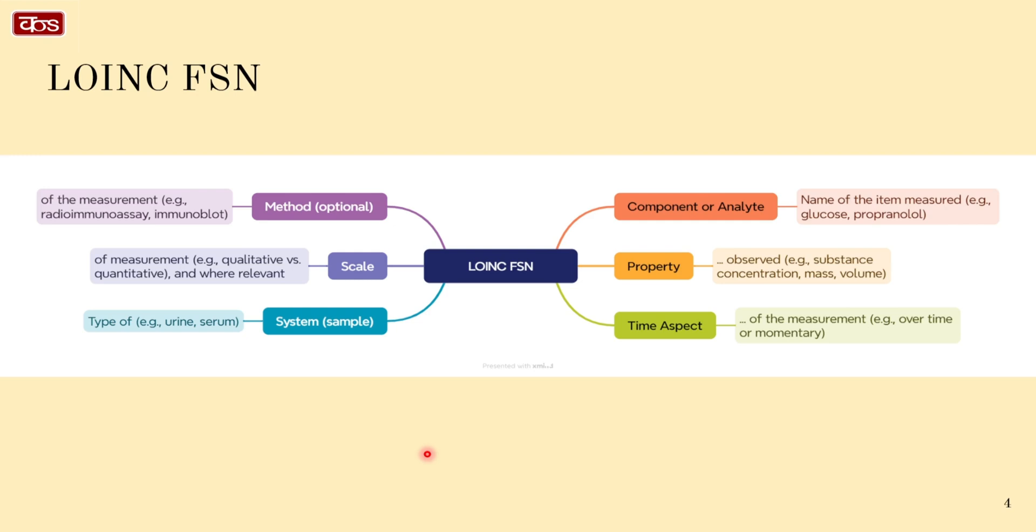This FSN has six parts, of which five are mandatory and one is optional. The mandatory parts are: component or analyte, property, time aspect, system sample, and scale.